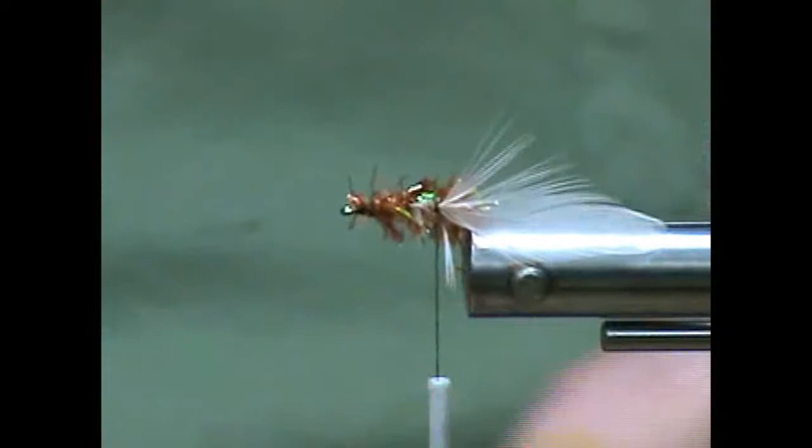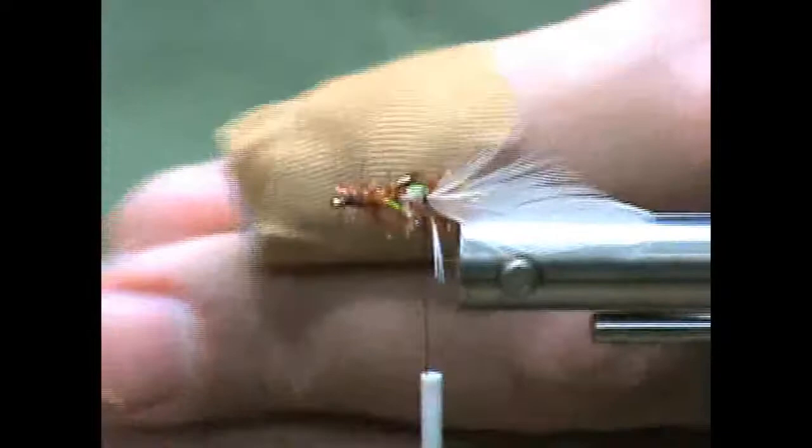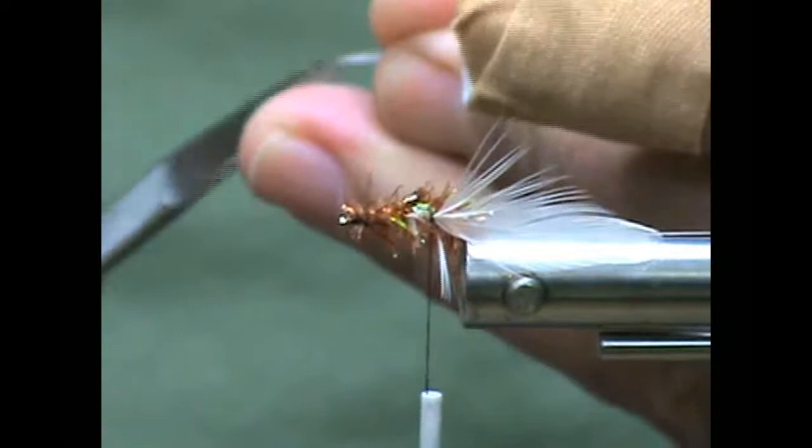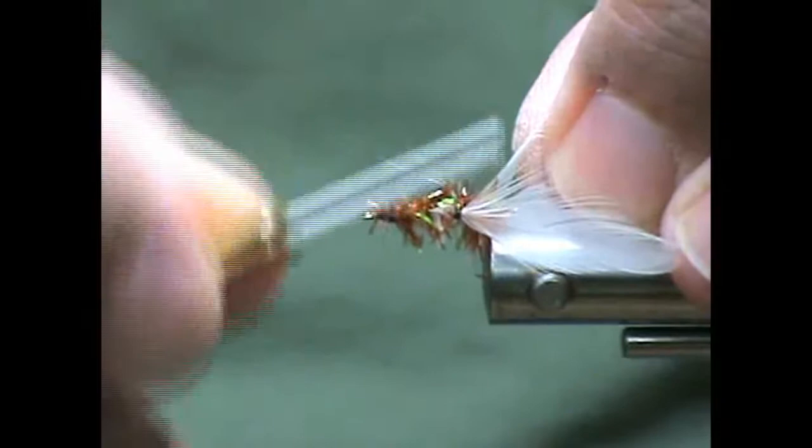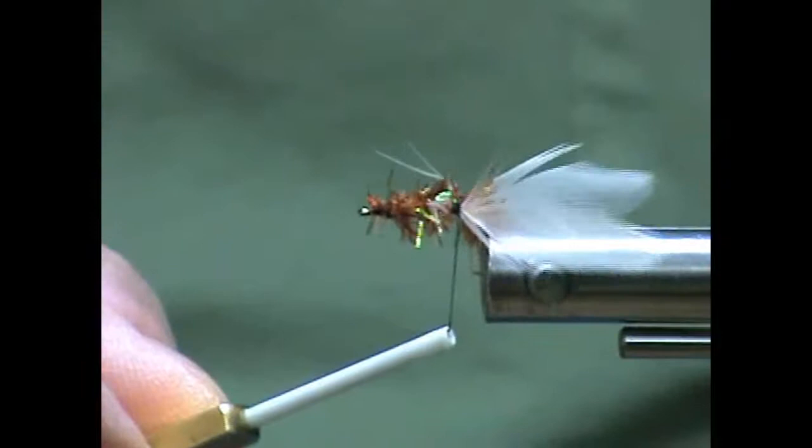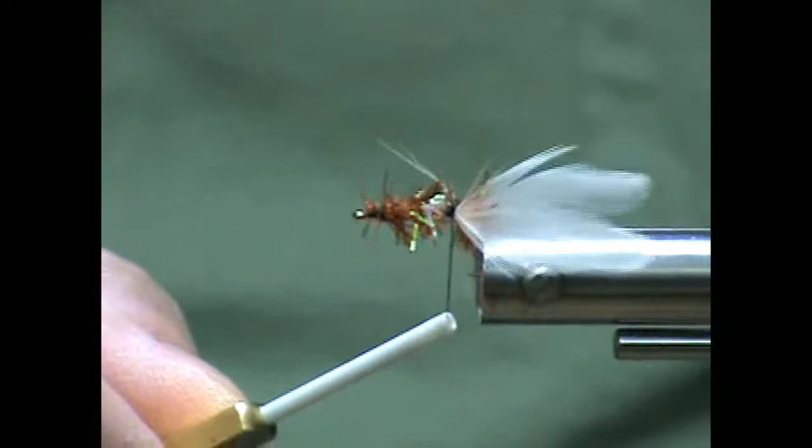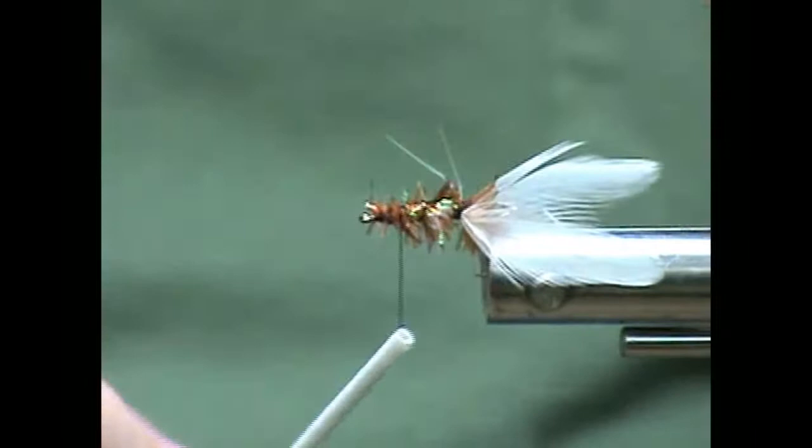And I'm going to repeat the process. Cut off my second feather and again I'm going to just trim up the bottom so I have that little brush design there. Get a couple of wraps in. And now we have those two feathers at an angle. And I'm going to bring my thread back up.